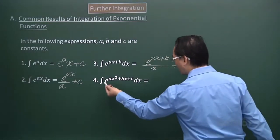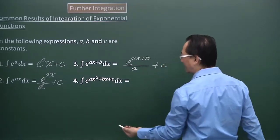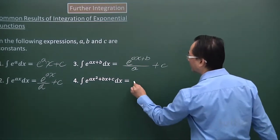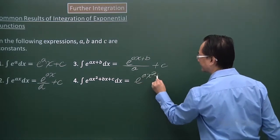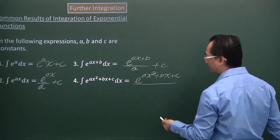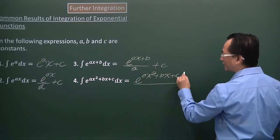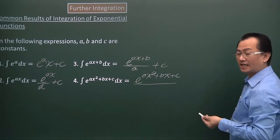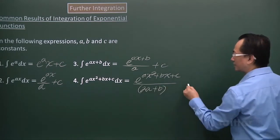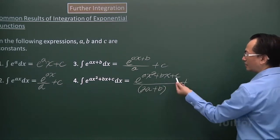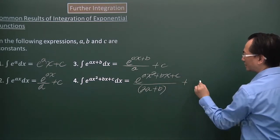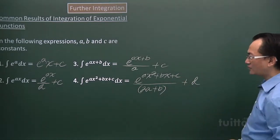Next, number 4: I have the exponential function where the index is a quadratic expression. I'll rewrite that, then divide by the result of differentiating this quadratic index expression, which gives 2Ax plus B. Because C is already used in this expression, I use D as the arbitrary constant instead.